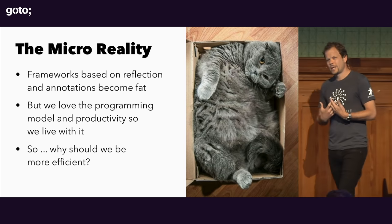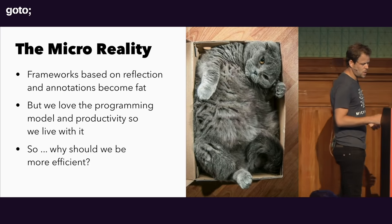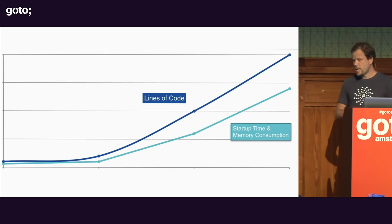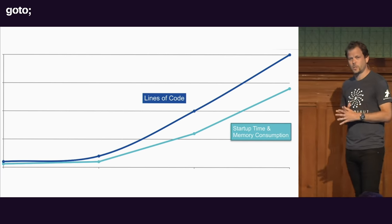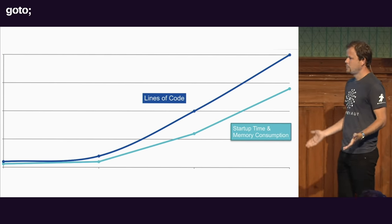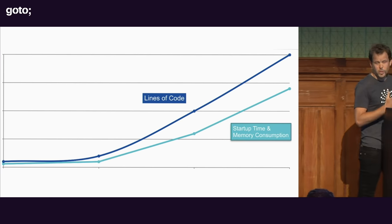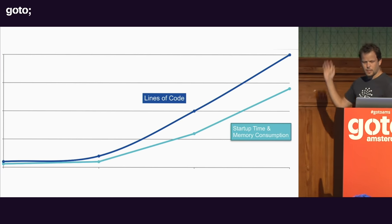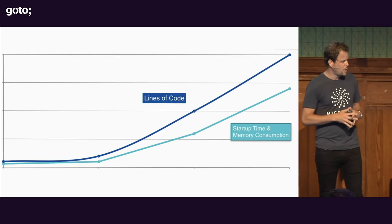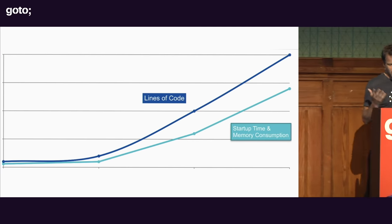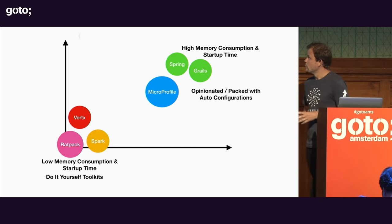Why can't we be more efficient? Isn't there a way to be more efficient in Java? There's a correlation in a typical Spring or traditional Jakarta EE application between the number of lines of code and the startup time and memory consumption. As your project grows in size, your startup time and memory consumption goes up. This is an unbreakable correlation.